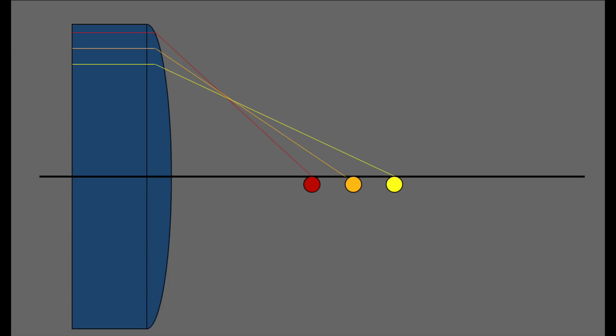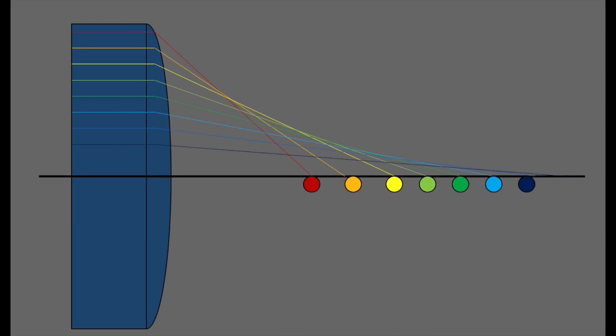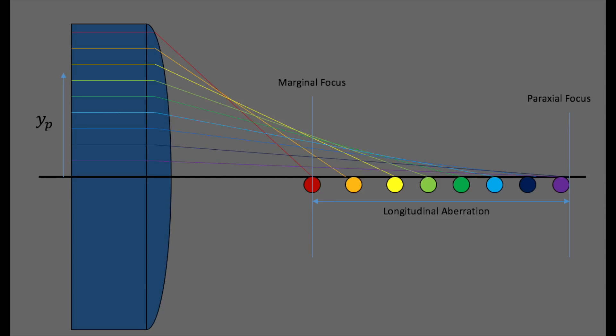Spherical aberration is an optical effect observed in an optical device that occurs due to the increased refraction of light rays when they strike a lens near its edge as opposed to its center. The refracted marginal rays will focus closer to the lens than the refracted paraxial rays.